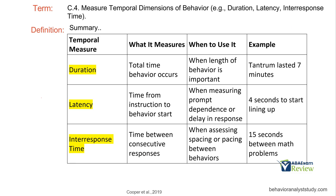Quick summary: the key is knowing when to start the measurement. Latency: from the SD to the beginning of the behavior. Inter-response time: from the end of one response to the beginning of the next. Duration: onset to offset, total time the behavior occurs. Examples — duration: tantrum lasted seven minutes; latency: four seconds to start lining up after the SD; inter-response time: 15 seconds between math problems.